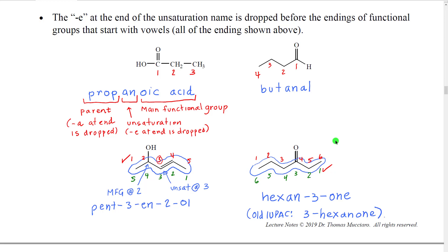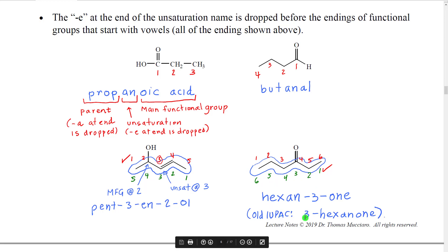For a ketone example: we look for the correct numbering scheme and want the ketone at three instead of four. We have six carbons total, so 'hexa', drop the 'a', '-ane', drop the 'e', dash-three, dash-one, giving 'hexan-3-one'. In the old IUPAC, this number would have been in front of the parent, so it would have been called '3-hexanone'.